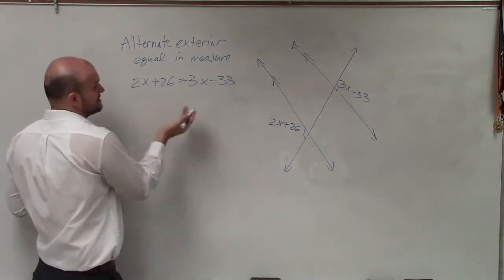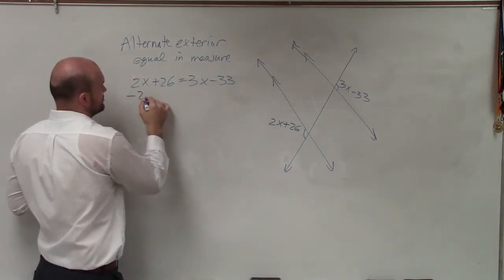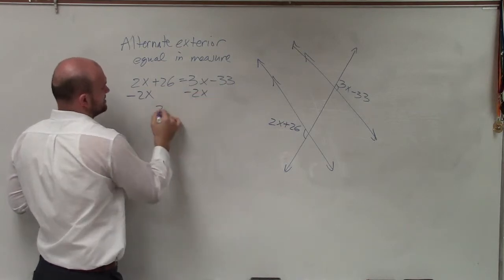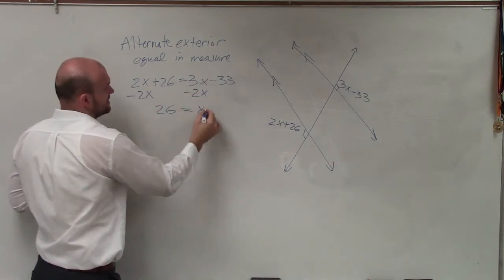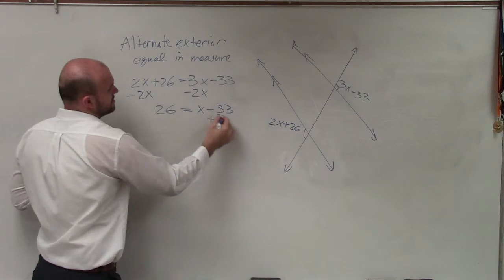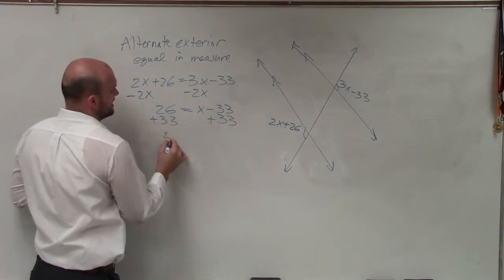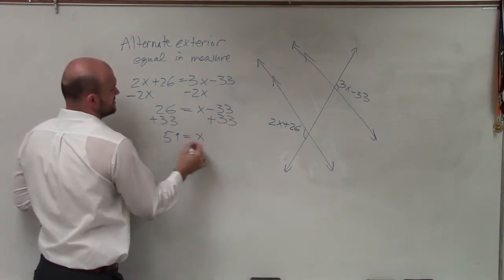Now, to solve for the missing variable, I just need to get x by itself. I'll subtract 2x on both sides, and I get 26 equals x minus 33. To solve for x, I add 33 to both sides, and I get 59 equals x.